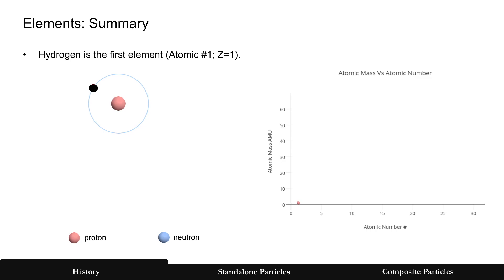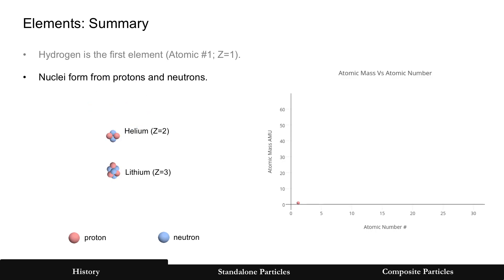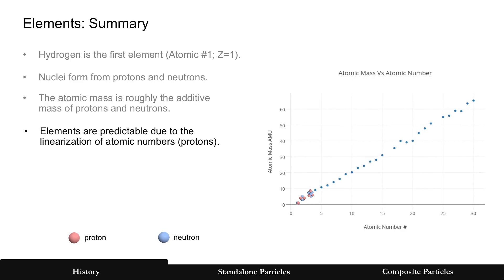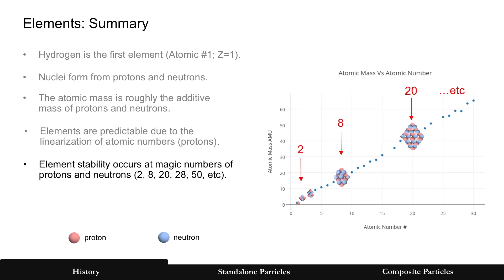Summarizing the elements: hydrogen has atomic number z=1, plotted on the chart by its mass or energy. Moving on to helium, z=2, and lithium, z=3 — the number of protons. In blue, they're also separated by neutrons, but the key is the atomic number, the number of protons. They're predictable because of the line, and here are those magic numbers — stability at certain geometries: 2, 8, 20, 28, 50.